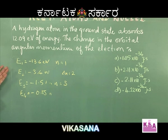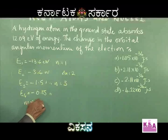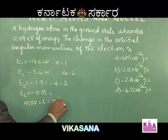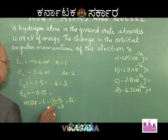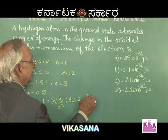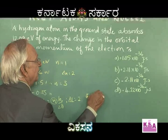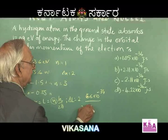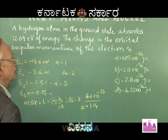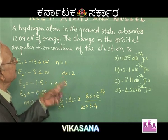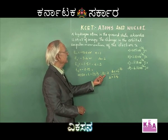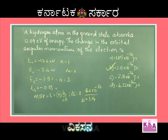The formula for angular momentum is L = mvr = Nh/2π. The change in angular momentum ΔL = ΔN × h/2π = 2 × (6.6×10⁻³⁴)/(2π). With π = 3.14, the 2s cancel, giving ΔL = 6.6×10⁻³⁴/3.14 ≈ 2.11×10⁻³⁴ J·s. Since the atom absorbs energy, the change is positive. The correct option is B: 2.11×10⁻³⁴ joule-seconds.